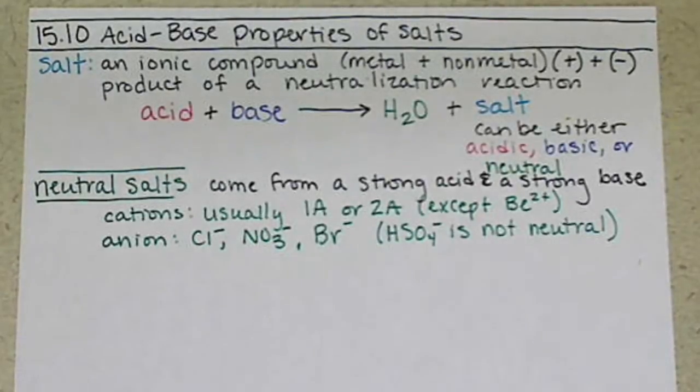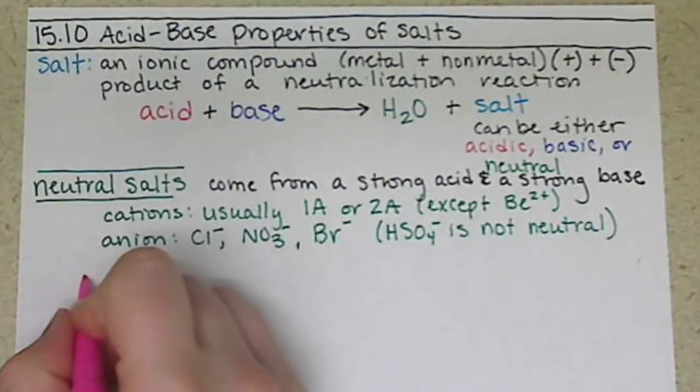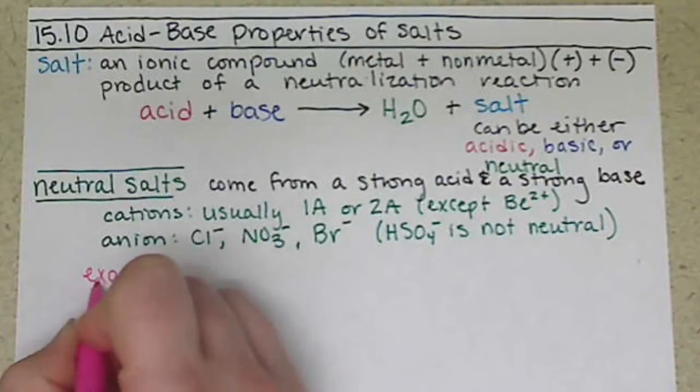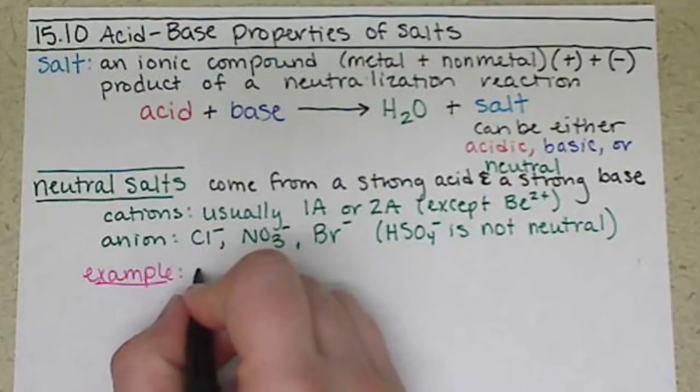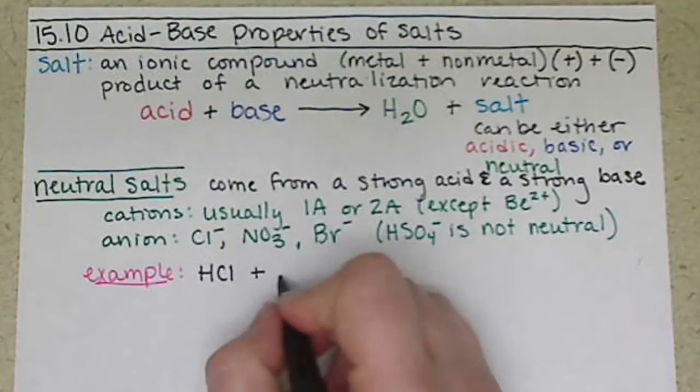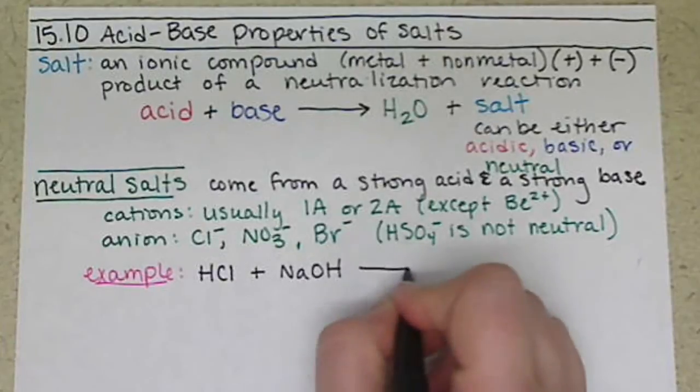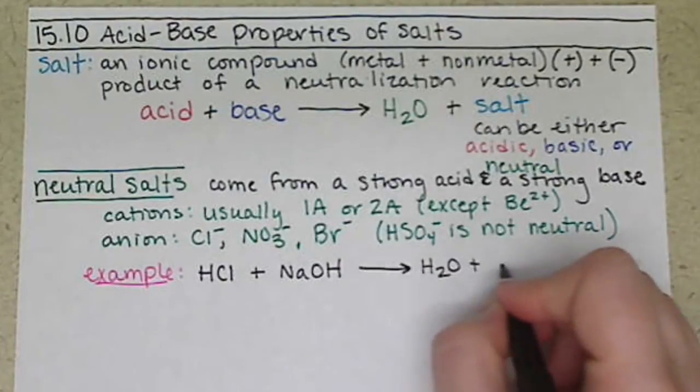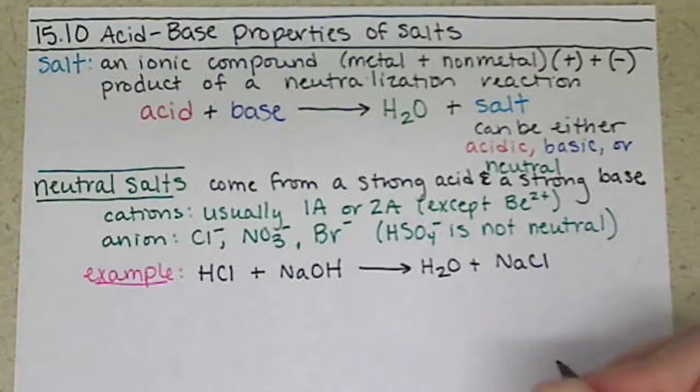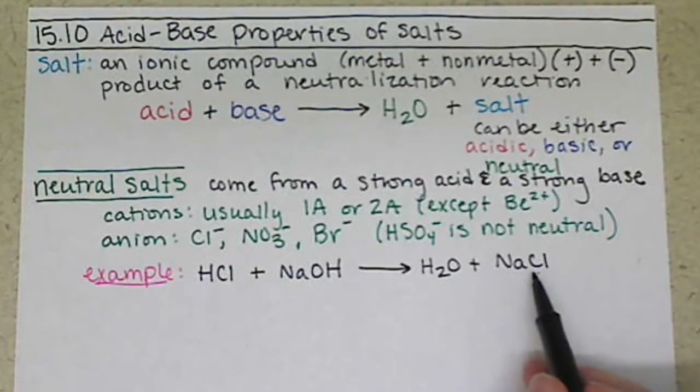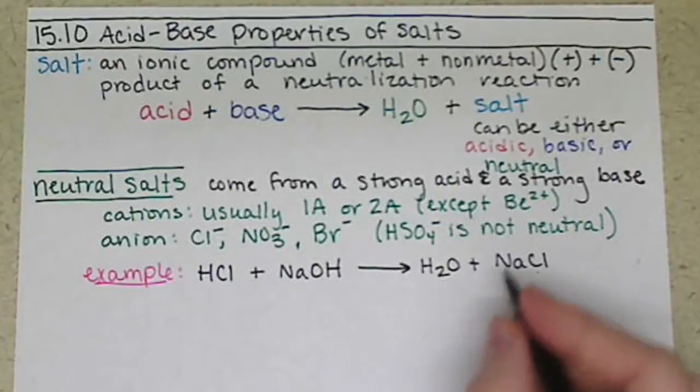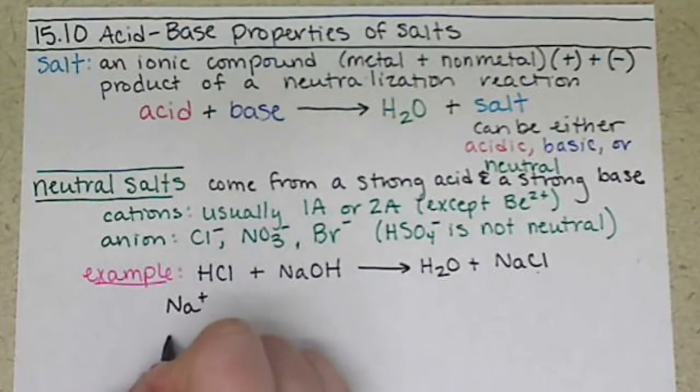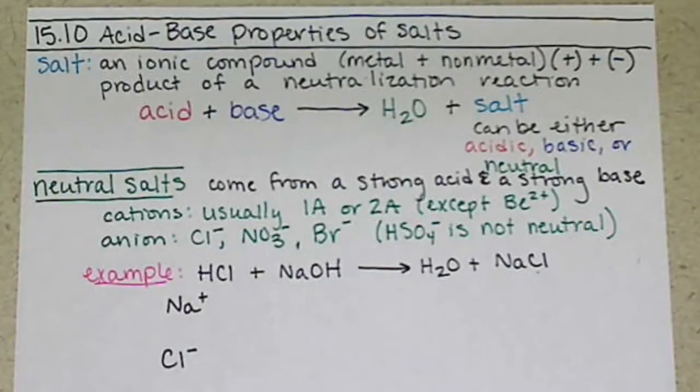So if we look at an example of a neutral salt formed from a neutralization, if we took, say, we have a strong acid, so let's take HCl with a strong base, NaOH, we're going to form water, and NaCl. So NaCl is our salt.